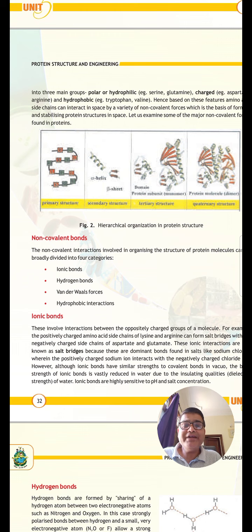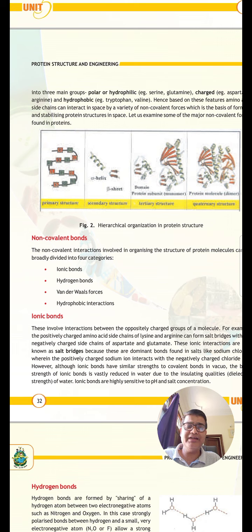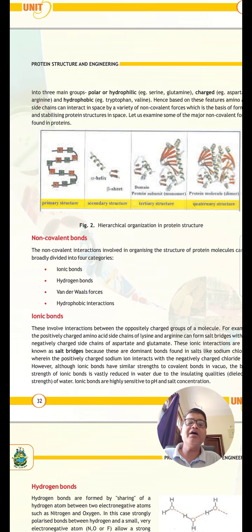Ionic bond is a bond between two charged ions — one is a cation and one is an anion. Cation is positively charged and anion is negatively charged. If any molecule or atom loses its electron, it becomes a cation. On the other hand, if any atom gains electrons, it is known as an anion. So there is a bonding between cation and anion — that type of bonding is known as ionic bond.